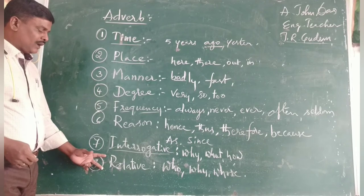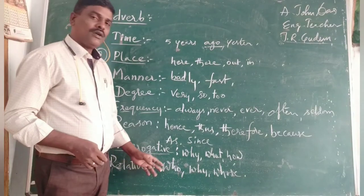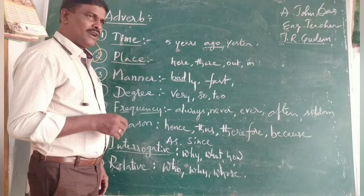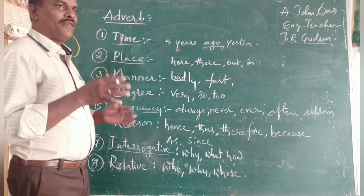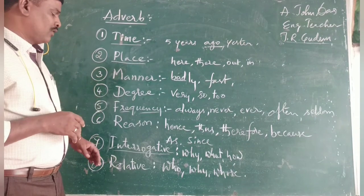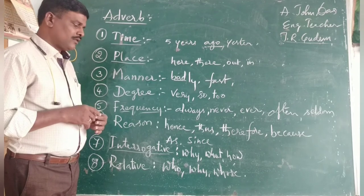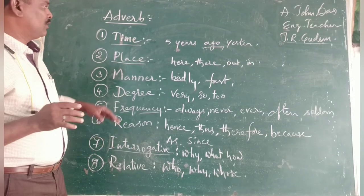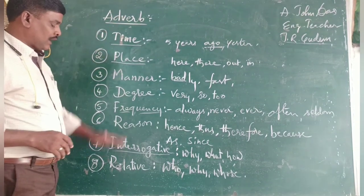The next one is relative adverbs. Relative adverbs tell the relation between sentences. For example: 'He is my father who is feeding me.' 'She is the woman who is weeping there.' 'I know the reason why you are crying.' 'I know whose kind it is.' These are the words used for relative adverbs.